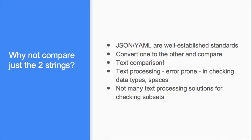Now we agree we have a problem. We have JSON data and YAML data — how do we compare them? The first approach that comes to mind: both are established standards, so why not convert YAML to JSON or JSON to YAML and do a text comparison? The problem with text comparison is you don't want to be checking spaces, extra keys, indentation, and all those things. So we decided not to go in that direction.